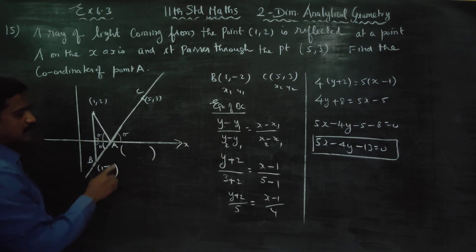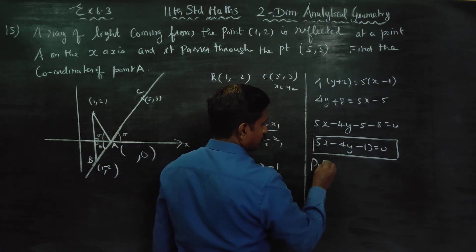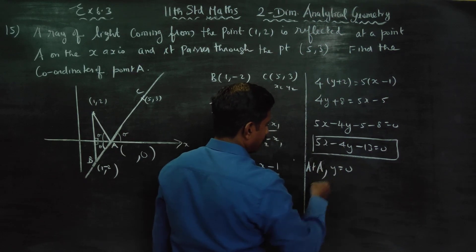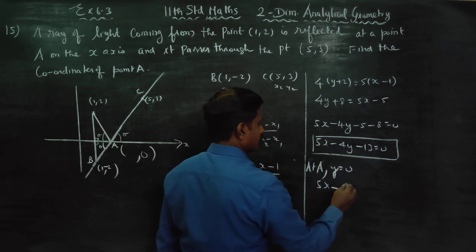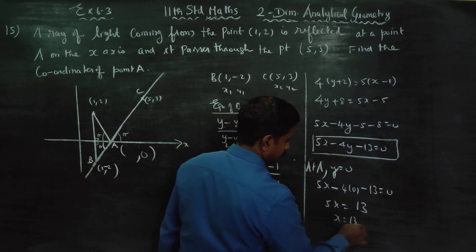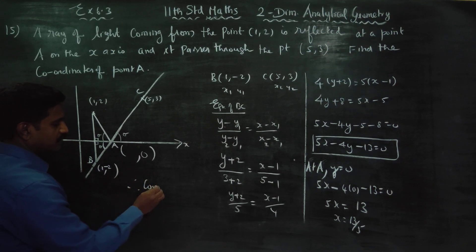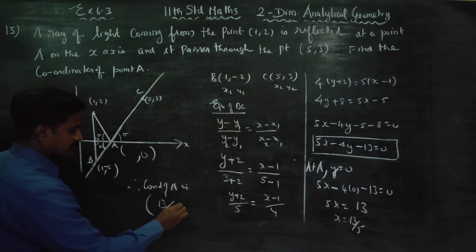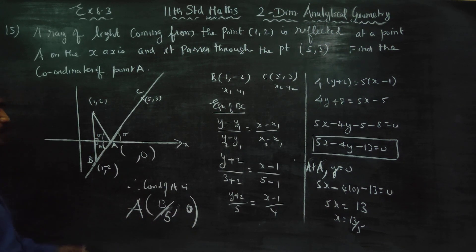Now find the coordinates of point A. Point A lies on the x-axis, so on the x-axis the value of y is always 0. Put y equal to 0 in the equation: 5x minus 4 into 0 minus 13 equals 0, so 5x equals 13, x equals 13 by 5. Therefore the coordinates of point A are (13/5, 0).